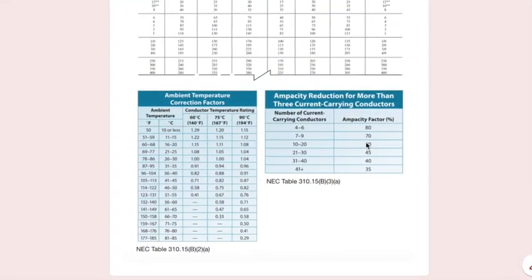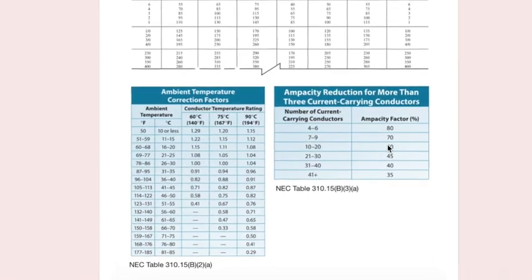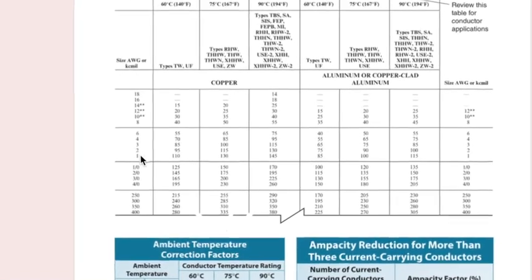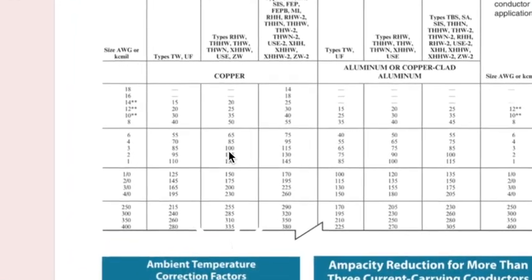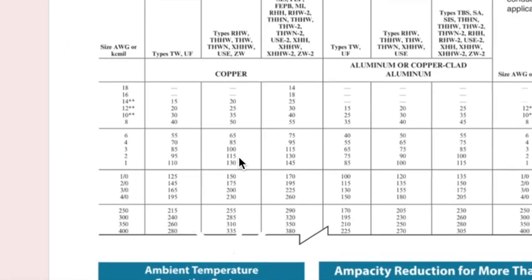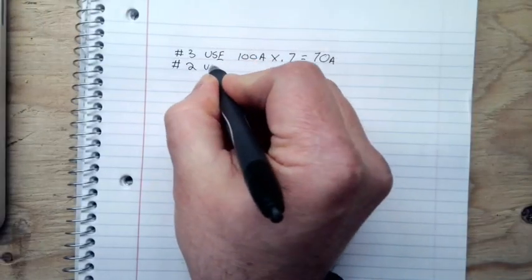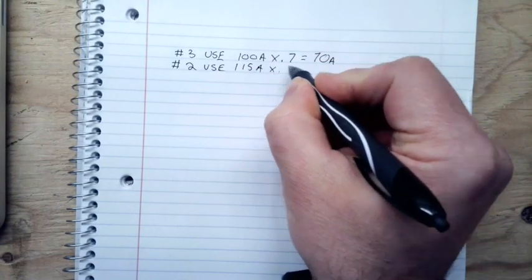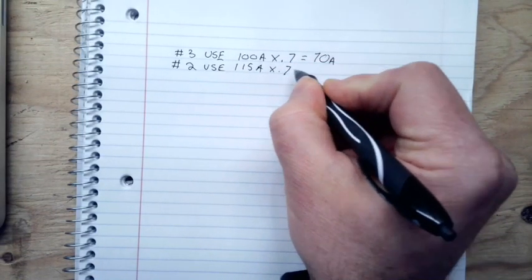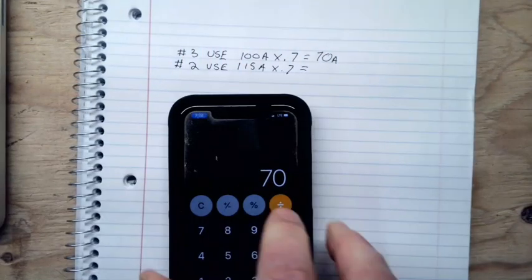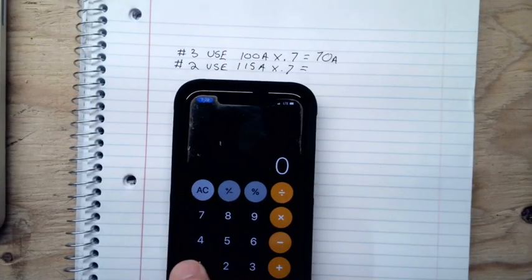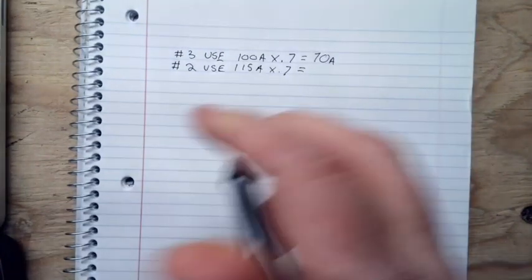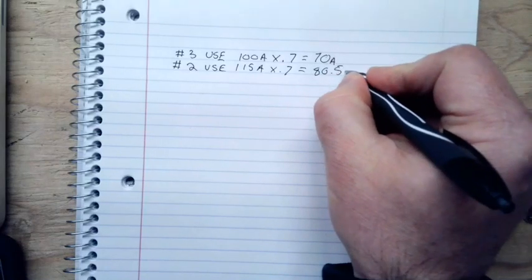So now we just got to keep working what we did before. So I just did a number three at 100 amps. So now we're going to jump up to a number two at 115. Number two U.S.E. at 115 amps. Remember, your adjustment factor will not change. So we're going to go with 115 times 0.7 equals 80.5. Still not anywhere near what we need for amperage.